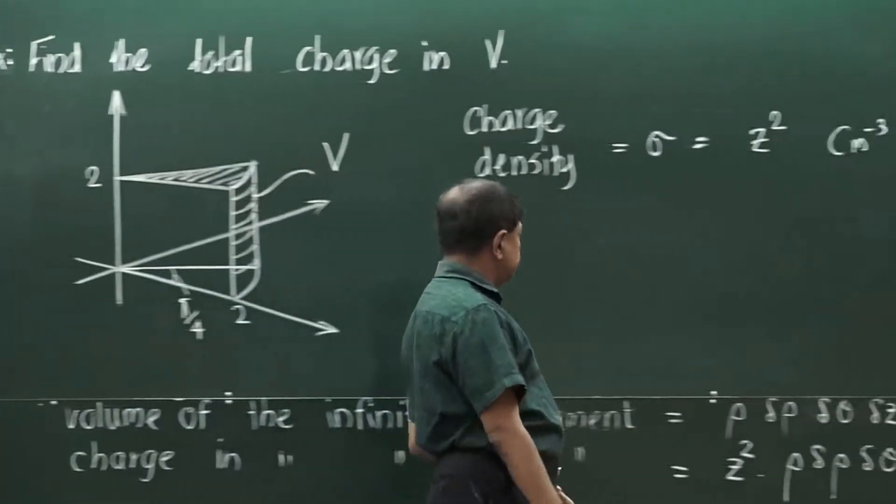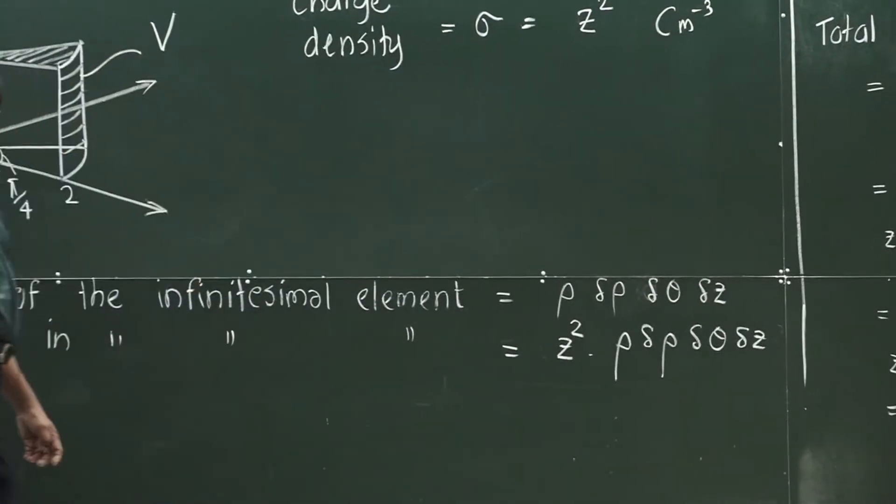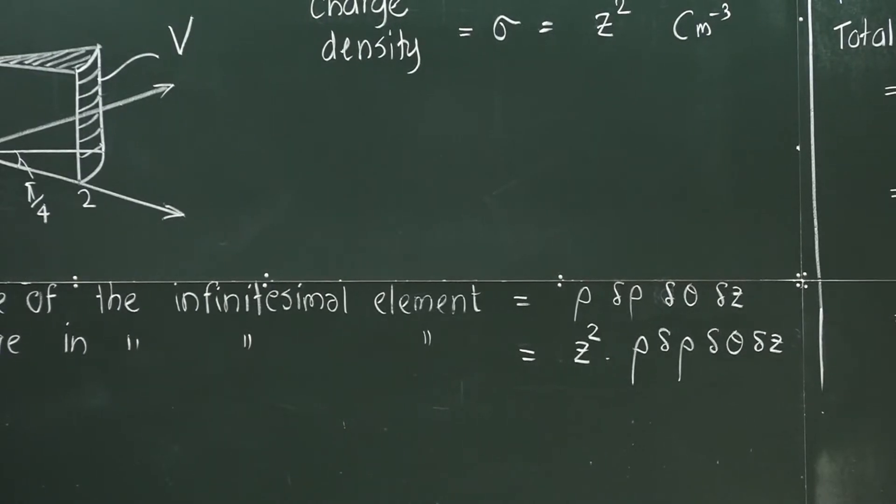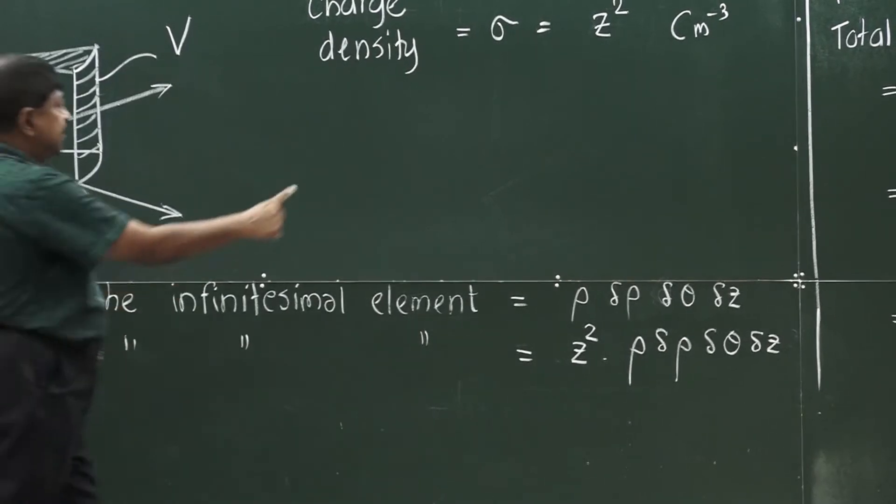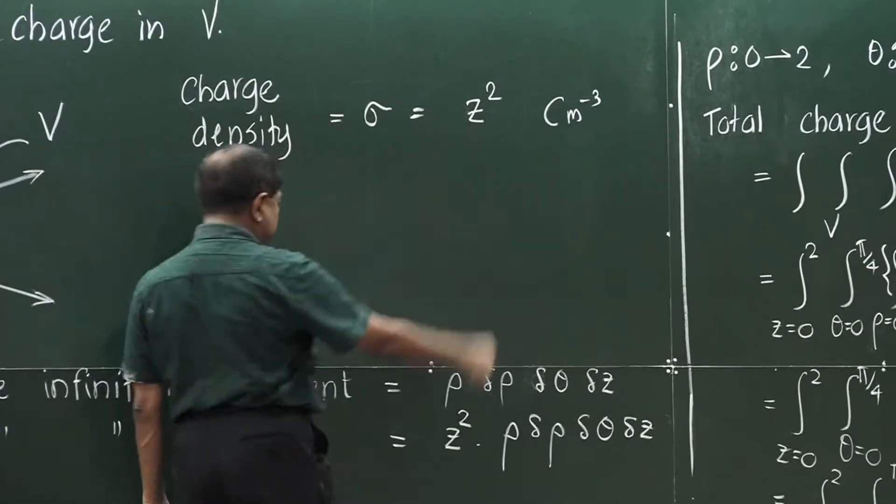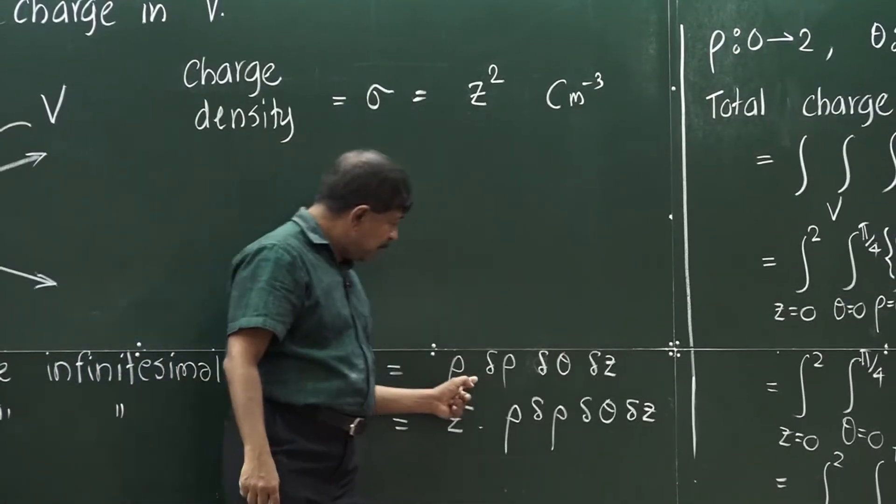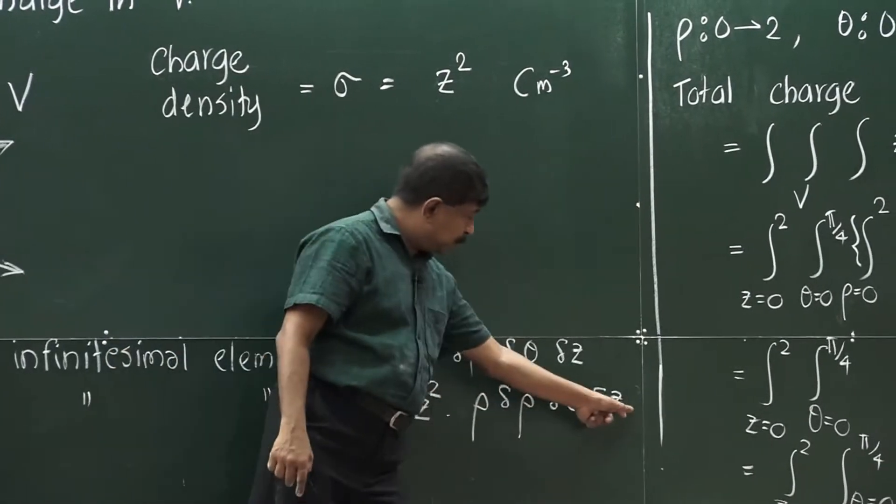This is what we have here. To find the charge, we need to multiply it by the charge density. The charge density is z squared. So, we multiply this volume by the charge density and you will end up with this one.